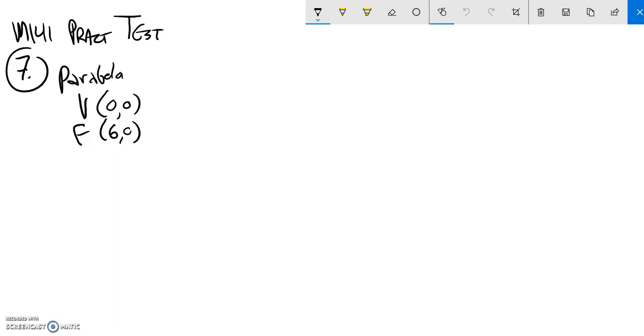Final practice test problem number seven: Write an equation for a parabola that has a vertex at (0,0) and a focus at (6,0). Let me start by sketching what I know. So (0,0) is here, (6,0) - that's x equals six, so (6,0) would be here.